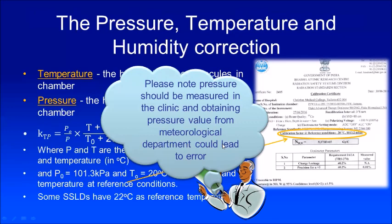Please note that pressure should be measured in the clinic — obtaining a pressure value from a meteorological department could lead to error. There is an interesting story: at one clinic located at a very high hill station, the physicist didn't have a barometer, so he called the airport to find the temperature and pressure. The airport provided sea-level pressure, but he was at a very high altitude so the actual pressure was low. As a result, his output measurement was wrong by about 15%, which resulted in wrong dose delivery to patients. Please make sure you have your own barometer and measure pressure in your clinic.